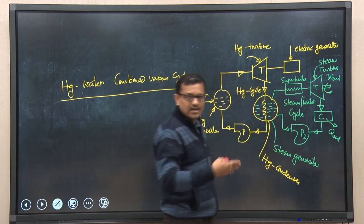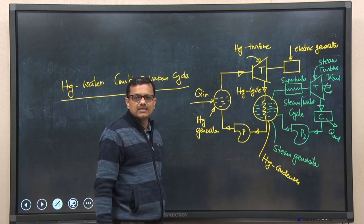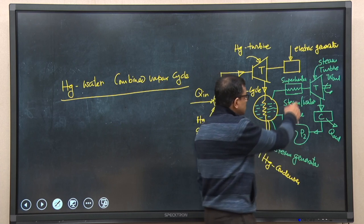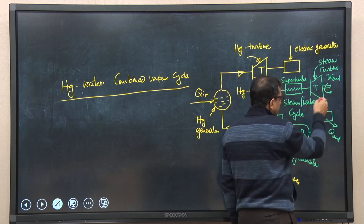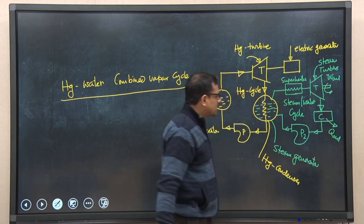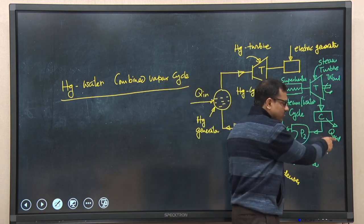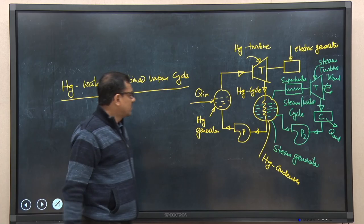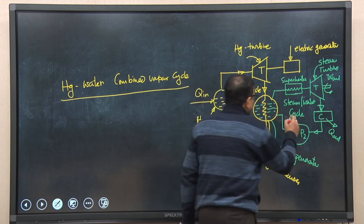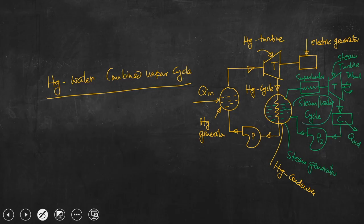Whatever steam is generated in the steam generator is in contact with the water, so essentially the steam obtained is saturated steam. To increase the quality of steam we need to superheat it, and that is why it is passed through the superheater. That superheated steam is taken to the steam turbine, does work, and we get W_out.